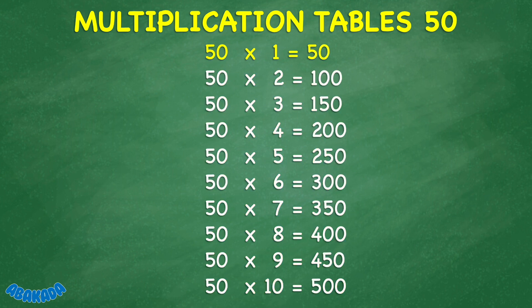50 times 2 equals 100. 50 times 3 equals 150. 50 times 4 equals 200. 50 times 5 equals 250. 50 times 6 equals 300.